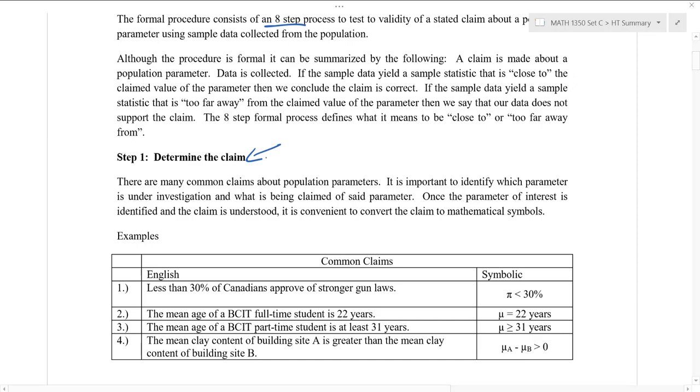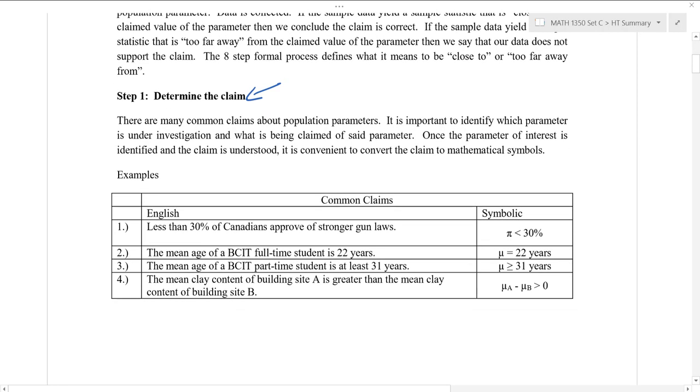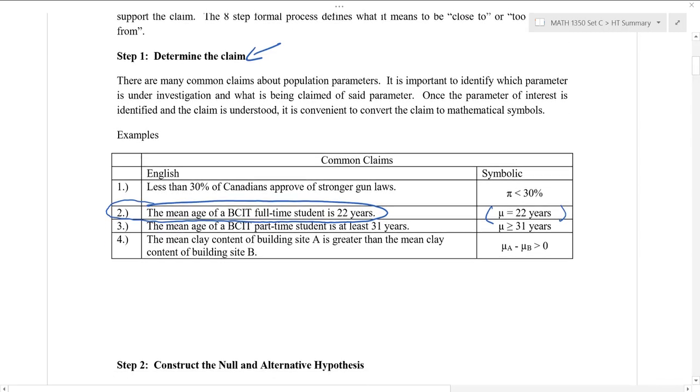There's many examples of claims. There's a few examples here. We're going to focus exclusively in this video on the second. So let's think about this one here. You might claim that the mean age of a BCIT full-time student is 22 years. In other words, mu for the population mean equals 22 years. This might or might not be true, but this is a claim that we might have and hypothesis testing will help us either support or reject this claim. So we'll work with this one here.